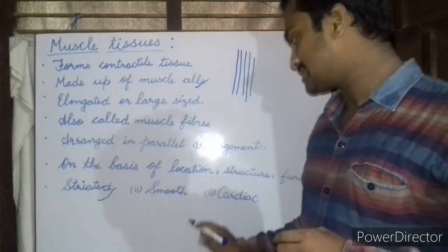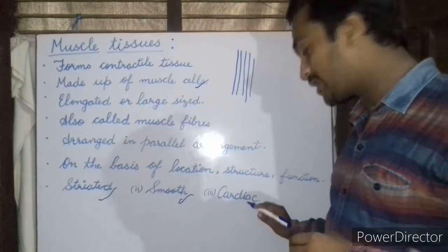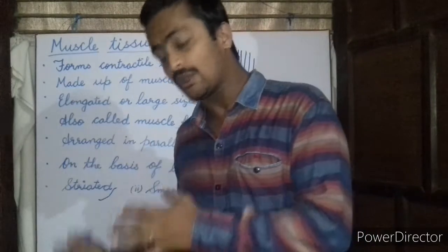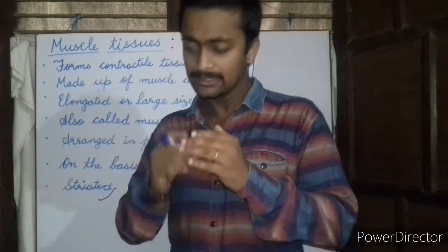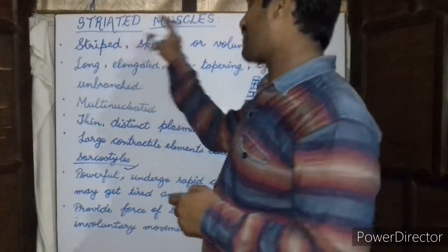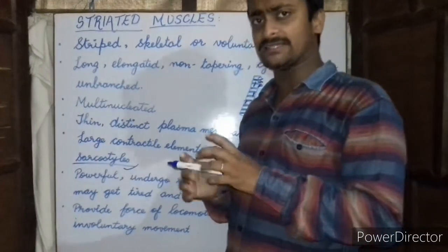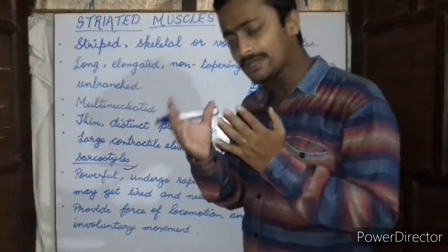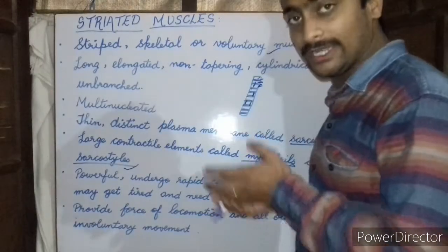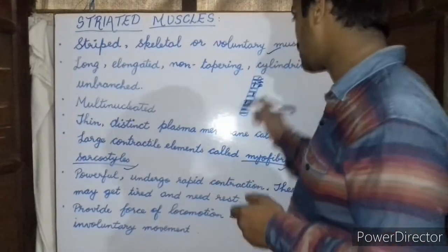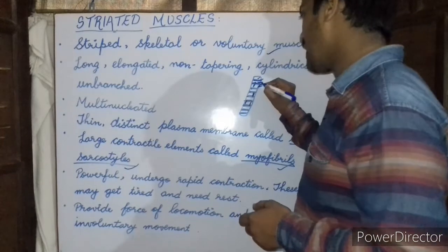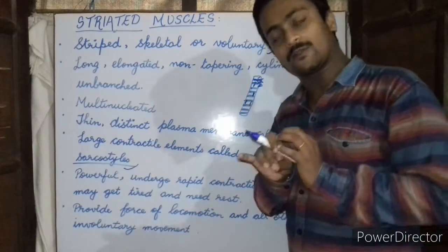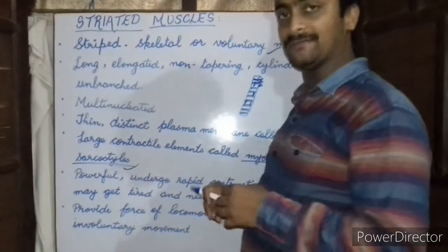The first type is striated, the second is smooth, and the third is cardiac. Now we will deal with all three in detail. First are the striated muscles. These striated muscles are known by three different names. The first is striped muscles. These striated muscles consist of alternate light and dark bands, and due to the presence of these alternating bands they are called striped muscles.